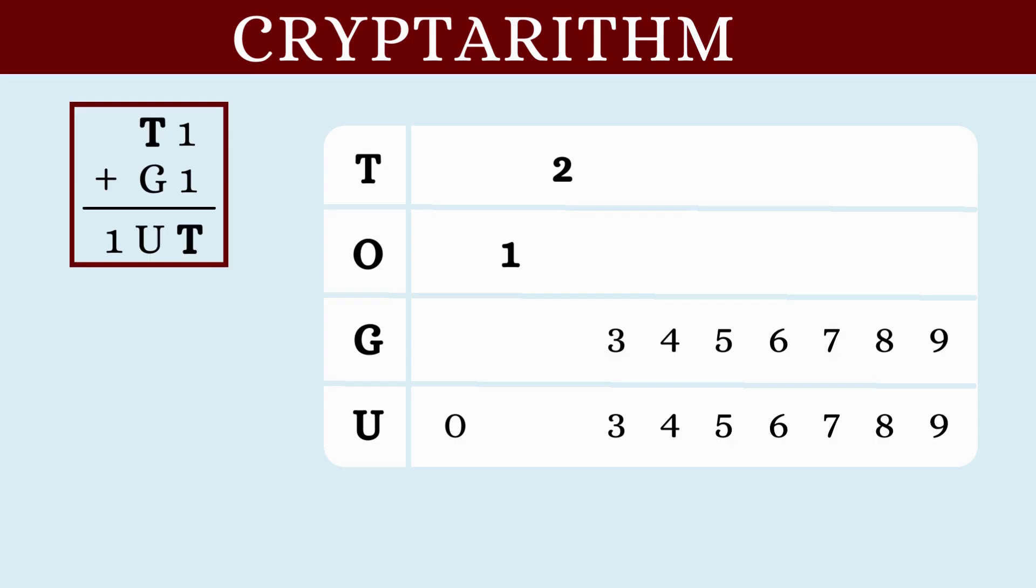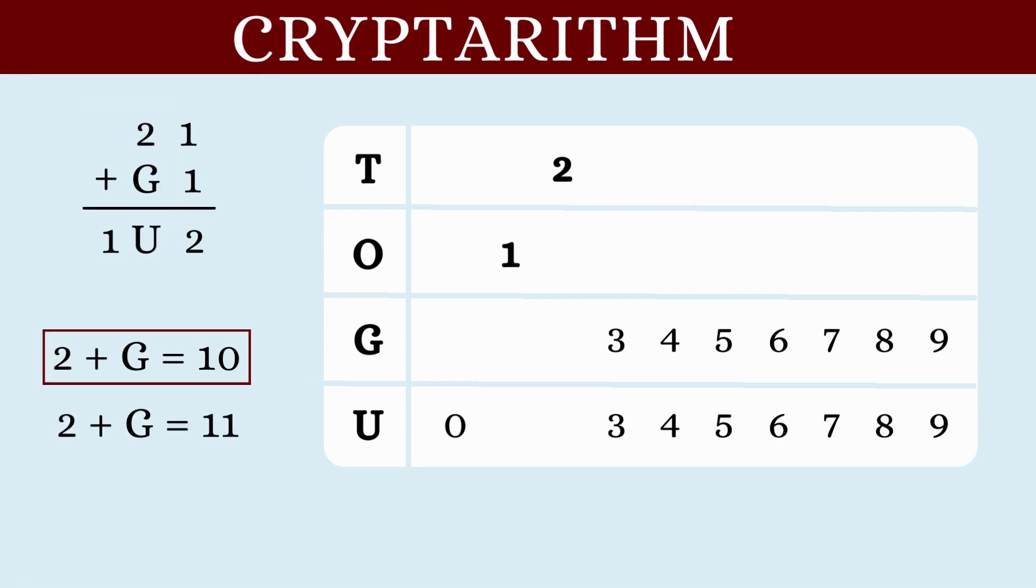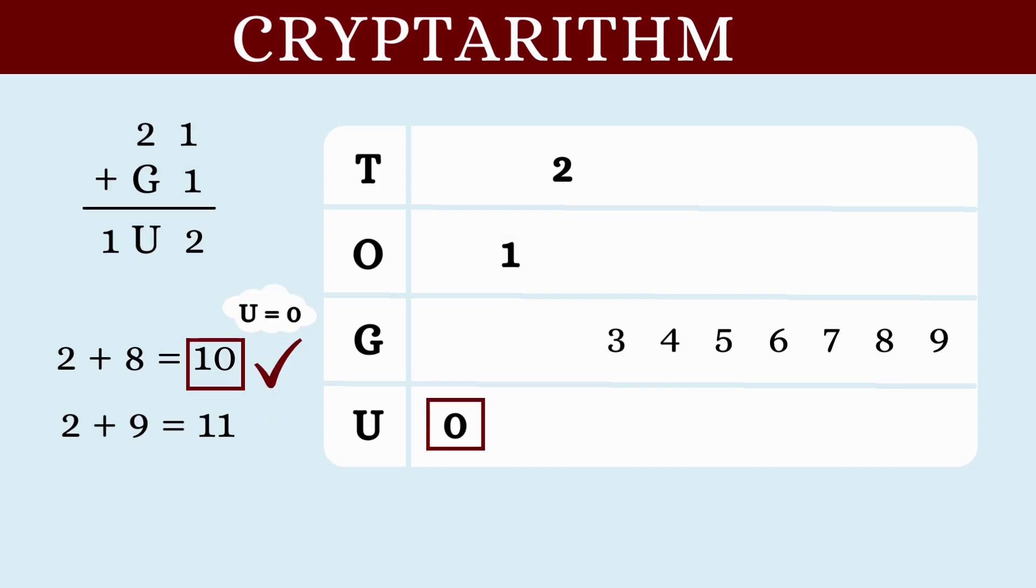Now, we replace the value of T in the question. Considering the tens place, we have 2 plus G is equal to 1U which means 2 plus G should give us a double digit number and the double digit number can be either 10 or 11. If it is 10, the value of G will be 8. And if it is 11, the value of G will be 9. Also, if the sum is 10, the value of U will be 0. And if the sum is 11, the value of U should be 1. But wait! We already have O is equal to 1. So U cannot be 1. The only possible answer is U is equal to 0.